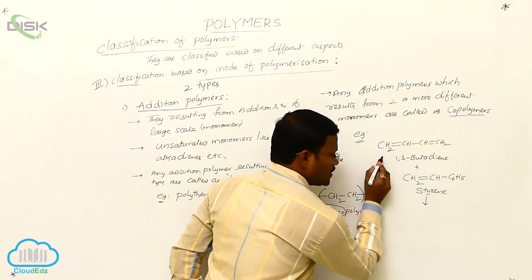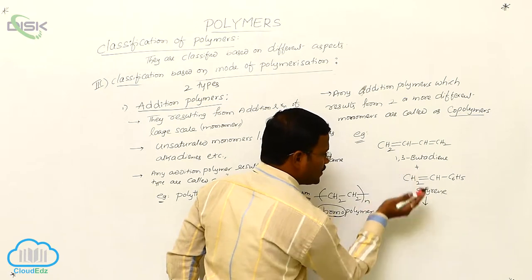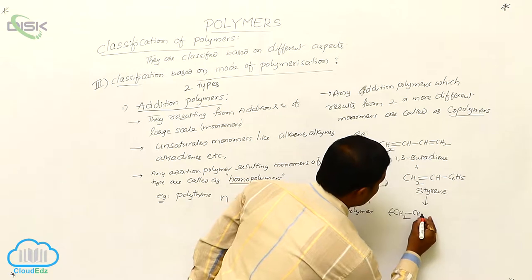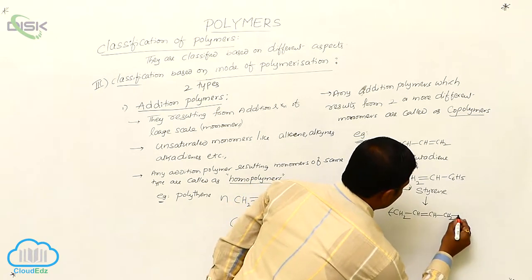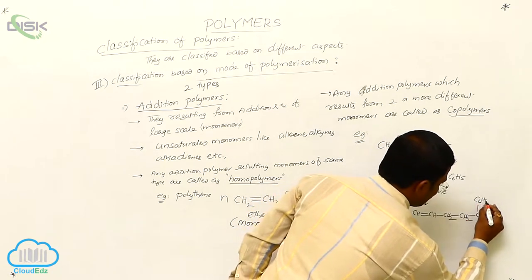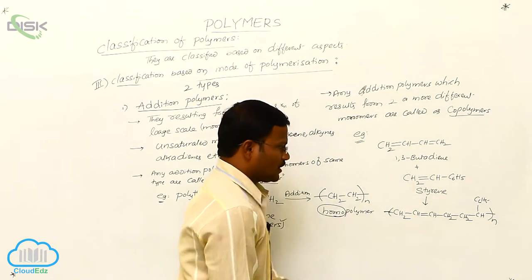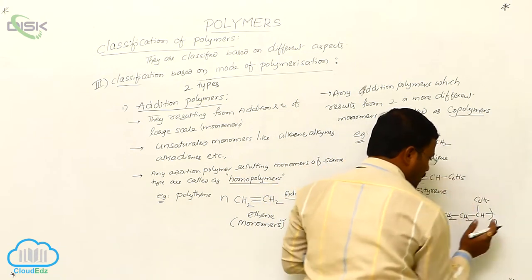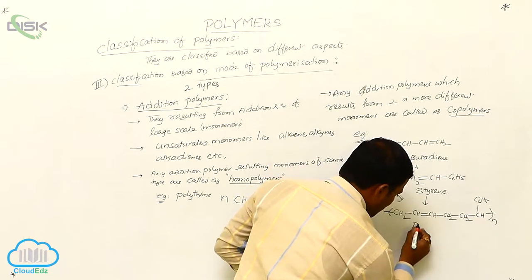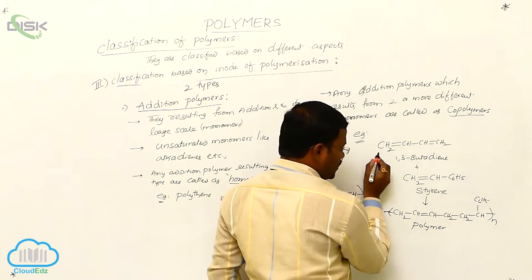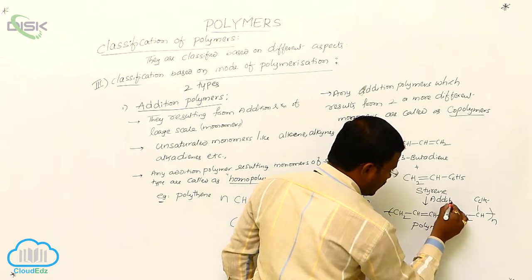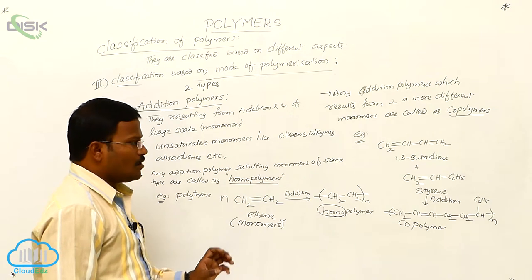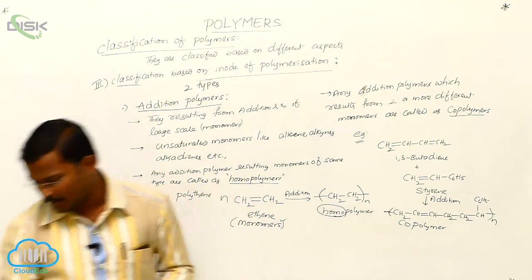In this case, 1,3-butadiene is one monomer and styrene is another type of monomer. Addition polymerization between these two different monomers results in the formation of a repeating structural unit (n). Since this is an addition reaction between two different types of monomers, the resulting polymer is called a copolymer.